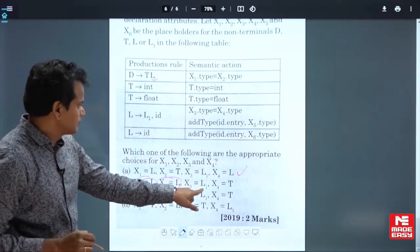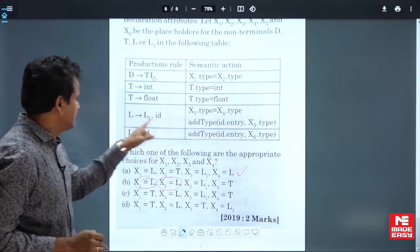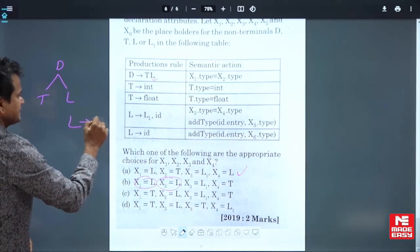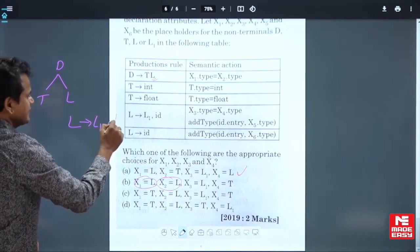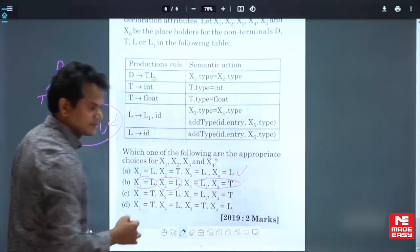Now come to x3 equal to L1, yes it can be, and x4 equal to T. But what is the production here? The production is L goes to L1 comma id. Where is the T here? T is not there. Therefore, this is not correct.